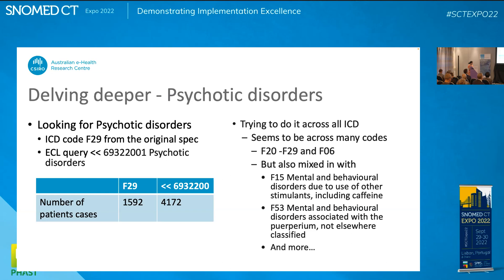One more example: psychotic disorders. If I'm looking for psychotic disorders, F-29 reflects that in ICD. A simple ECL query of descendants of 'psychotic disorder' still pulled out more than double the number of cases using the SNOMED codes. When I tried to do it across all of ICD — as a non-ICD person — I was told F-20 to F-29 and F-06. But there was a lot mixed in with F-15 and F-53, where F-53 was associated with pregnancy and antenatal, so postnatal depression got mixed in with postnatal psychotic disorders, making it hard to separate them out.